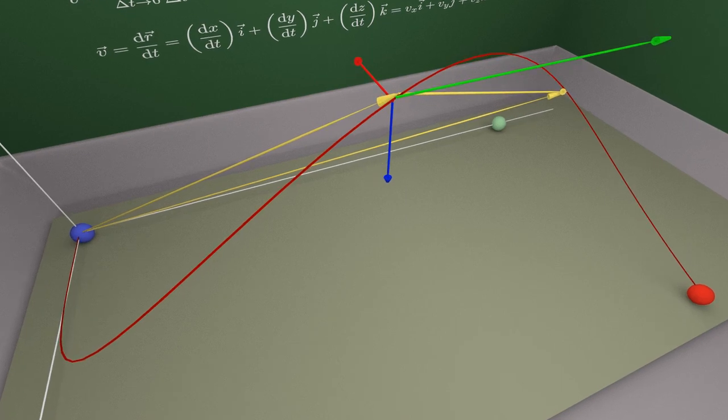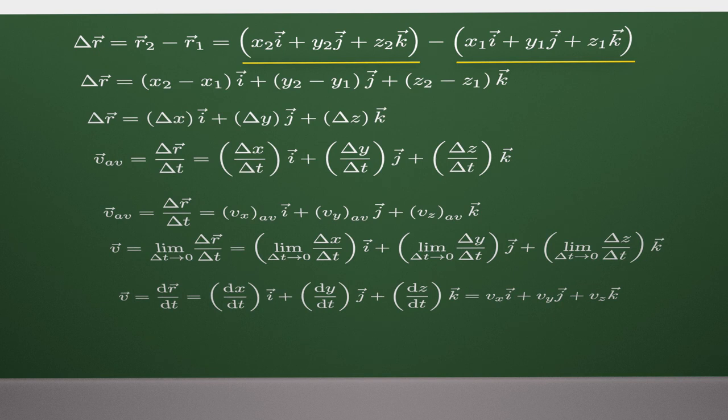So, if we want to know the displacement in space, then we must know the components of the initial position vector and the components of the final position vector.